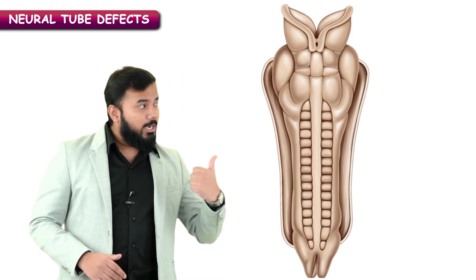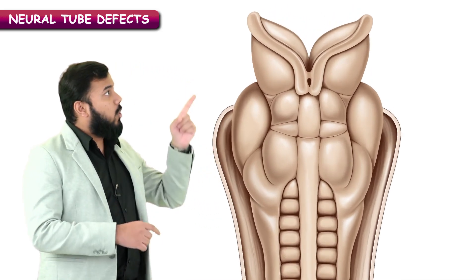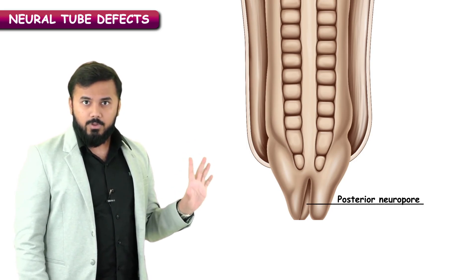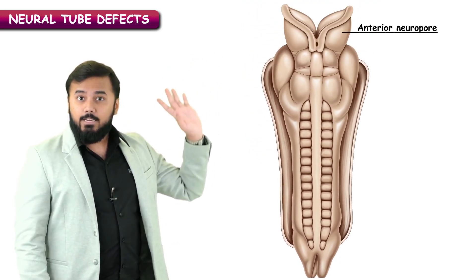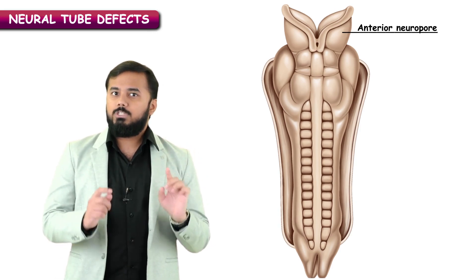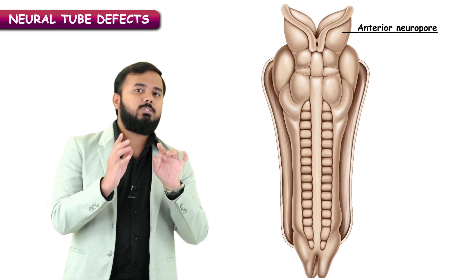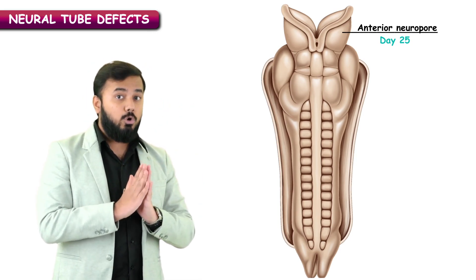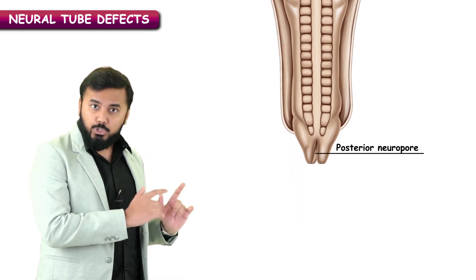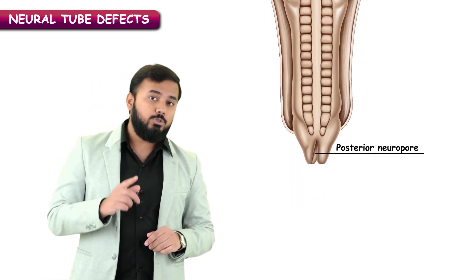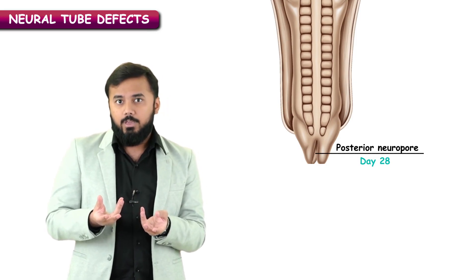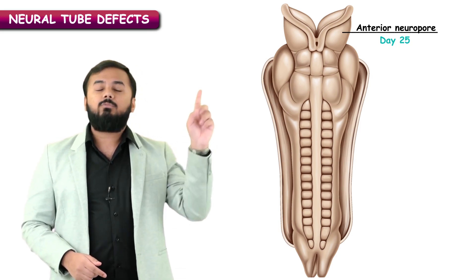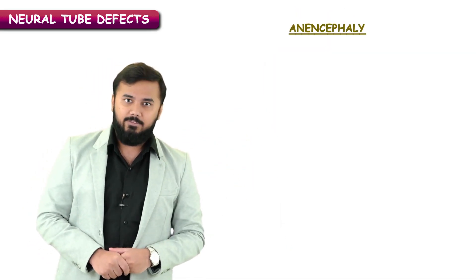If you look at the neural tube, it has got an anterior neuropore and a posterior neuropore. The anterior neuropore generally closes by day 25. The posterior neuropore should close by day 28. What happens if the anterior neuropore is not closing by day 25? That would lead to a condition called anencephaly, and you can see the picture of anencephaly here.